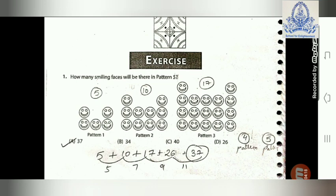The differences five and seven are consecutive odd numbers. The next odd number is nine, so pattern four has seventeen plus nine equals twenty-six smiley faces. The next odd number after nine is eleven, so pattern five has twenty-six plus eleven equals thirty-seven smiley faces. So the right option is thirty-seven.